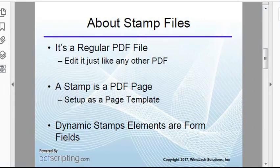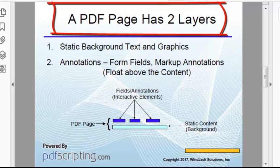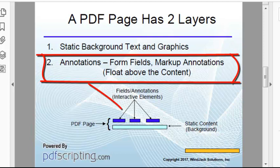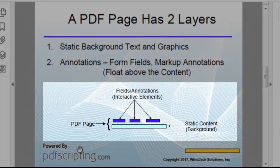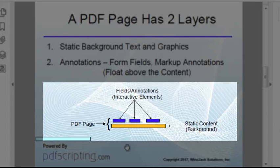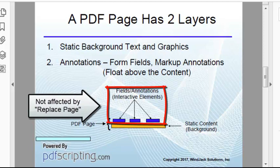Let's take a closer look at how a PDF is put together. A PDF page has two parts: it has the static background — that's all the graphics and text on the page — and then there are all the form fields and markup annotations that float over top of the graphics. We can literally take all that static text and graphics, pull it out of the PDF page, and replace it with a new set of static text and graphics. We just swap out the background of the PDF page, leaving in place all the fields, scripts, and most importantly, the page template. All we changed was how the page looked, not what the page does.